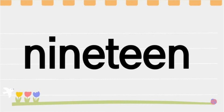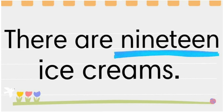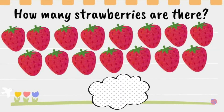Students, let's count 19. N-I-N-E-T-E-E-N, 19. There are 19 ice creams. Next, how many strawberries are there? Students, let's count. 1, 2, 3.